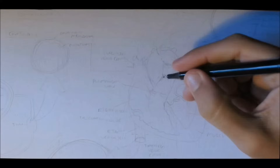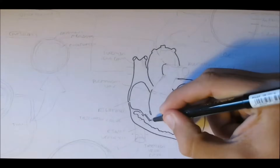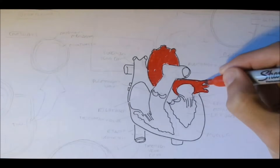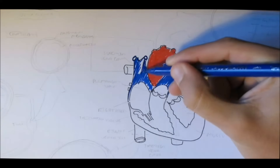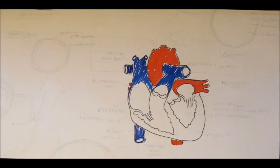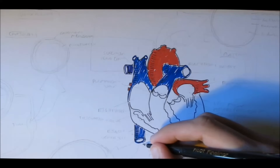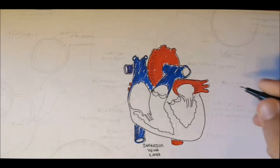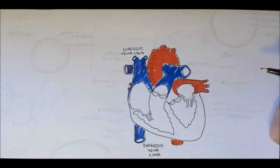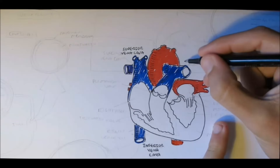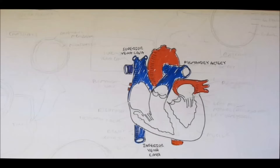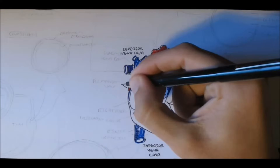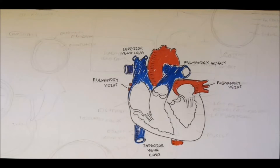Now let's look at more of the anatomy. Remember that red means oxygenated blood and blue means de-oxygenated blood. Arteries go away from the heart and veins go towards the heart. De-oxygenated blood comes to the heart from the inferior vena cava and the superior vena cava — inferior means below and superior means above. It will be pumped to the lungs through the pulmonary arteries, replenished with new oxygen, and this newly oxygenated blood will come back to the heart through the pulmonary veins, then be pumped out through the aorta to the whole body.